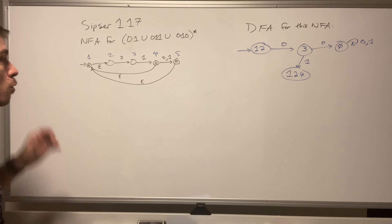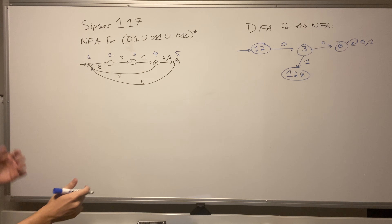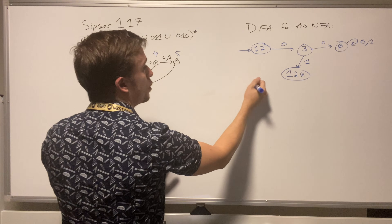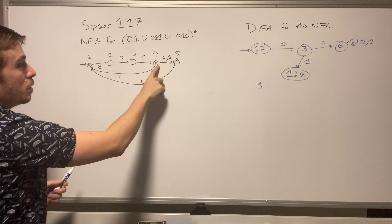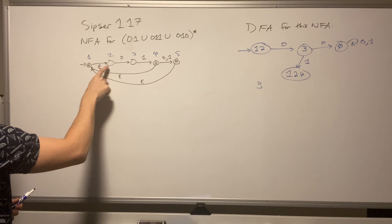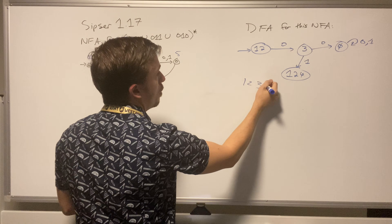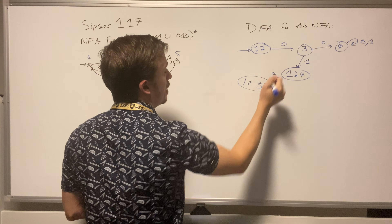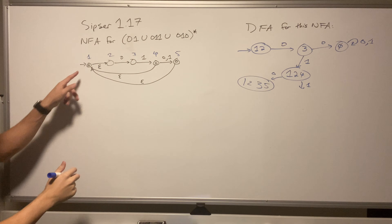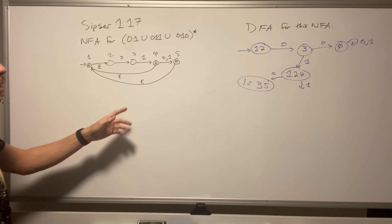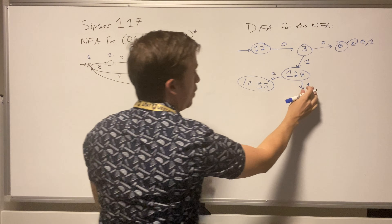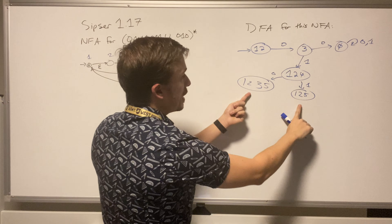In state one-two-four, if I read a zero: state one goes nowhere, state two goes to three, and state four goes to five. State five on an epsilon transition can go to one and two, so I reach the set one, two, three, five. If I read a one in state one-two-four: state one goes nowhere, state two goes nowhere, state four goes to five, and five epsilons to one and two — giving me the set one, two, five. Note these two states are not the same.